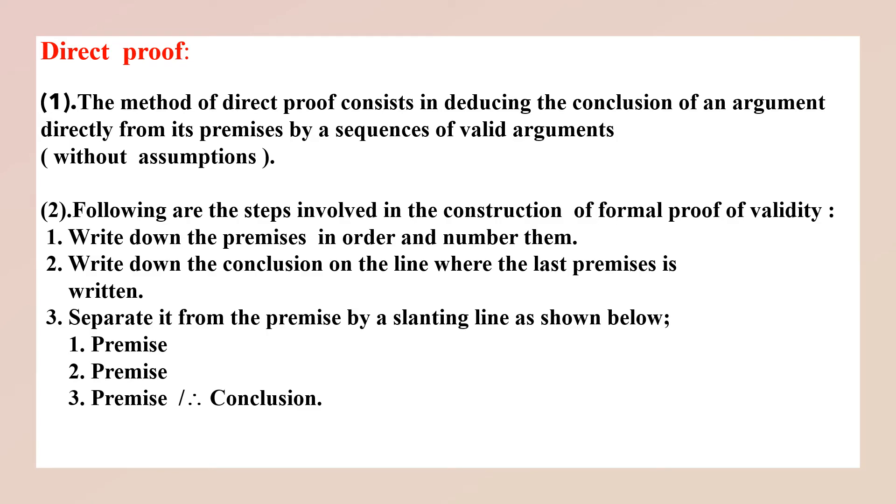Following are the steps involved in the construction of formal proof of validity. First, write down the premises in order and number them. Second, write down the conclusion on the line where the last premise is written. Third, separate it from the premise by a slanting line as shown below: first premise, second premise, third premise, slanting line, therefore conclusion.